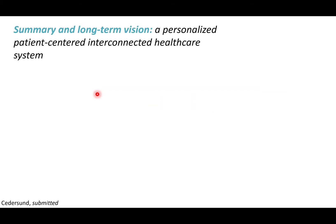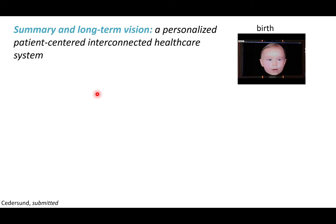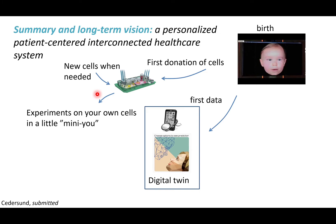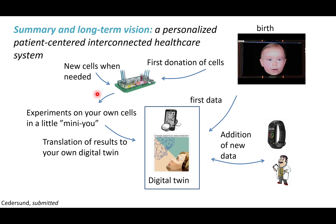The summary of our long-term vision is to have something that starts at birth: donate some cells and data to the digital twin, add those cells to the organ-on-a-chip, and perform physical experiments on your little mini-you, which you then translate using our models to your digital twin. You add new data from smart sensors or healthcare records and use it throughout your patient journey.